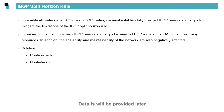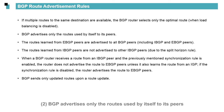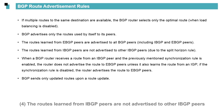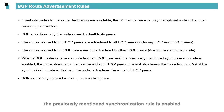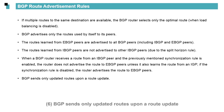Now, let's talk about route advertisement rules. First, when multiple routes to the same destination are available, the BGP router selects only the optimal route. Second, BGP advertises only the routes used by itself to its peers. Third, routes learned from eBGP peers are advertised to all BGP peers. Fourth, routes learned from eBGP peers are not advertised to other iBGP peers. Fifth, when a BGP router receives a route from an eBGP peer and the synchronization rule is enabled, the router does not advertise the route to eBGP peers unless it also learns the route from an IGP; if the synchronization rule is disabled, the router advertises the route to eBGP peers. Sixth, BGP sends only updated routes upon a route update.